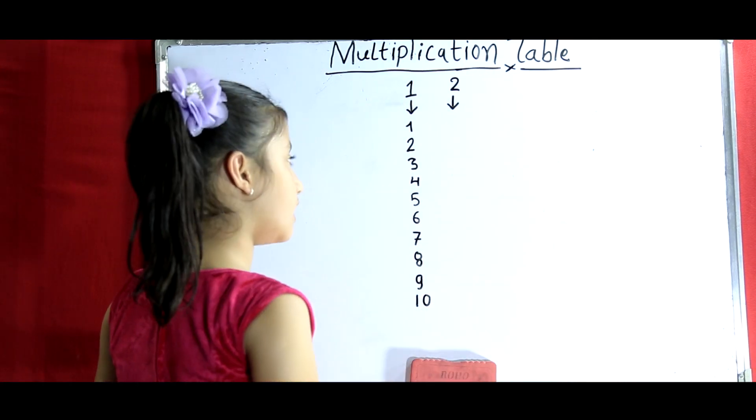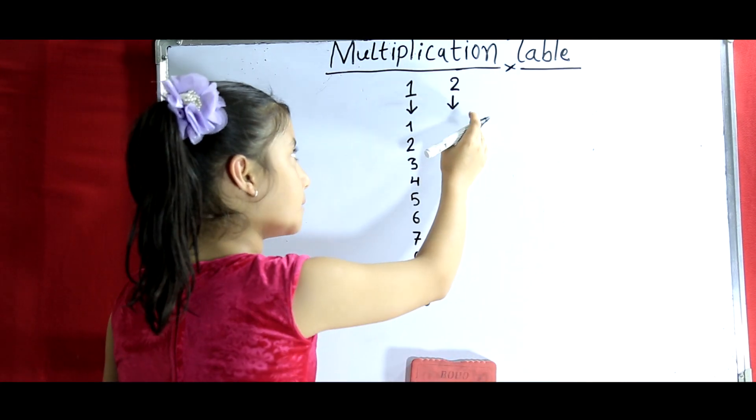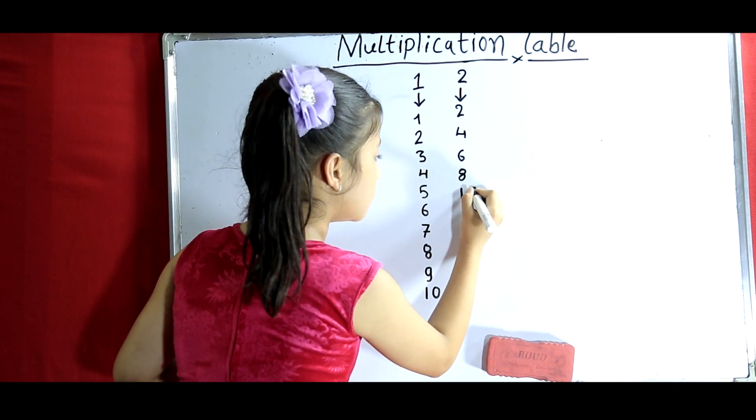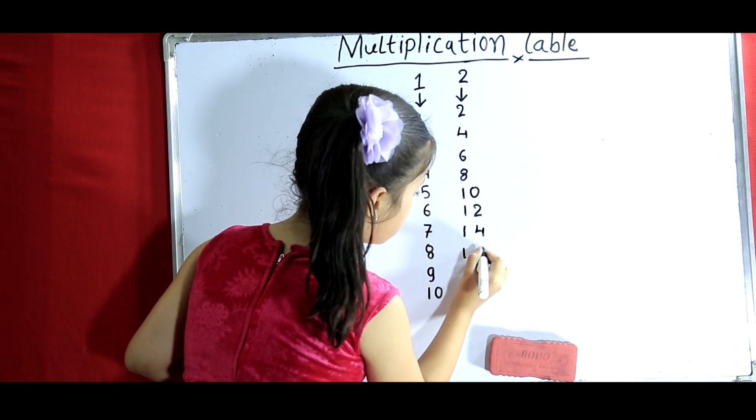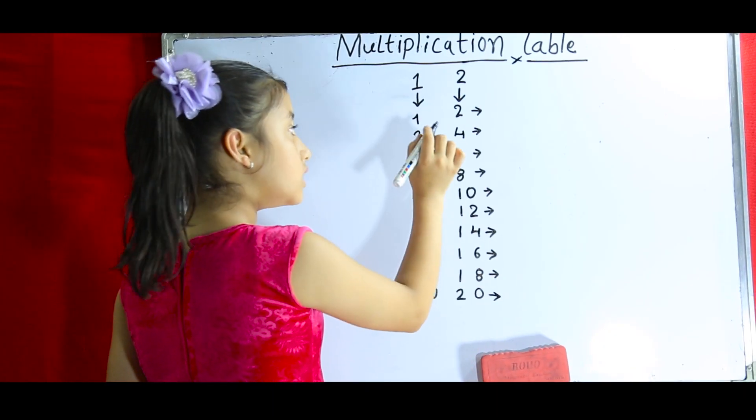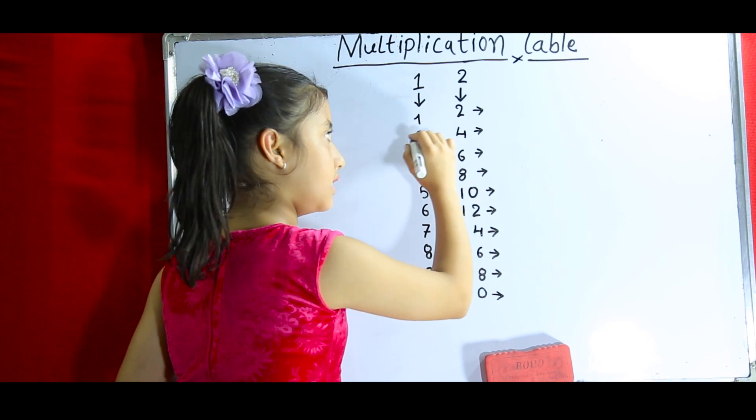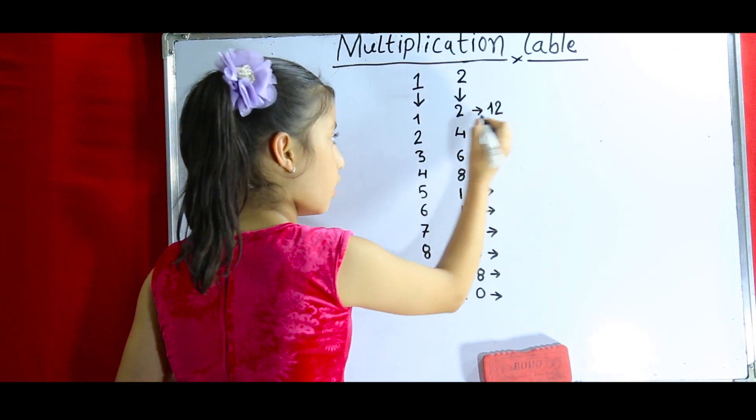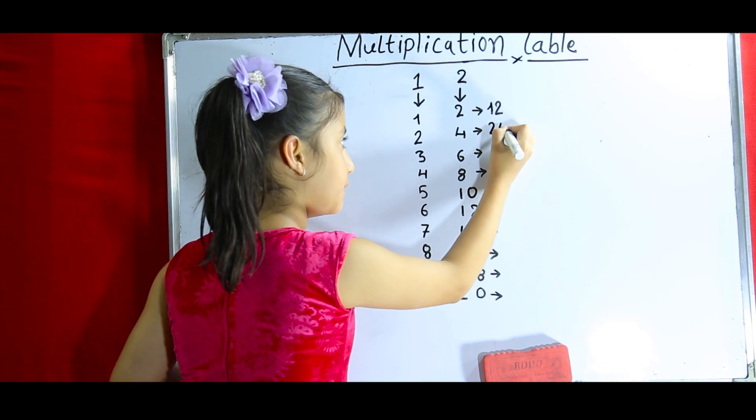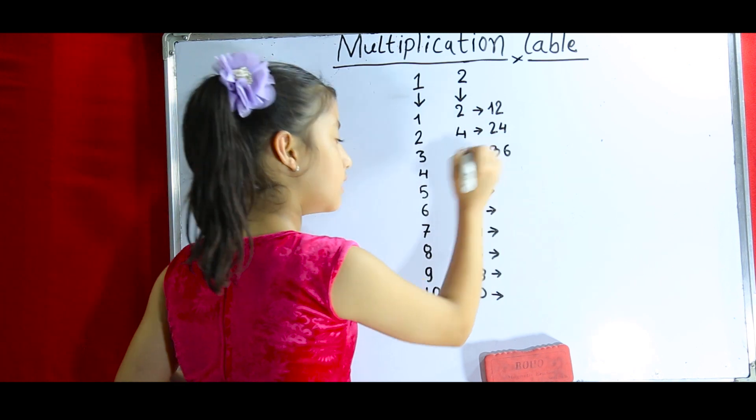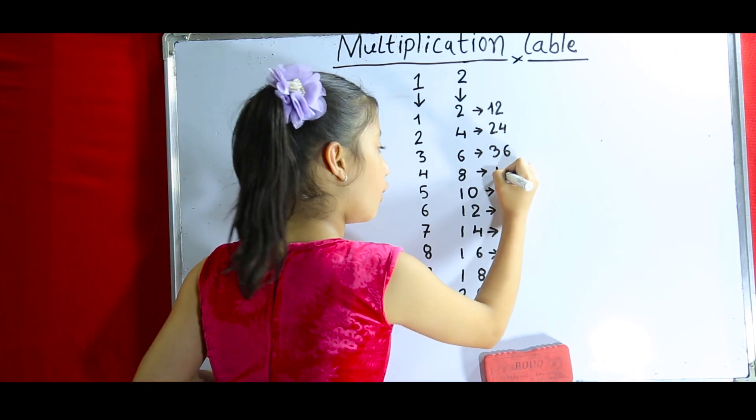So it's done. Now let's try the table of 2. So here no need to do anything, just copy this. 12, here also 24, here 2, 36, here also 48.